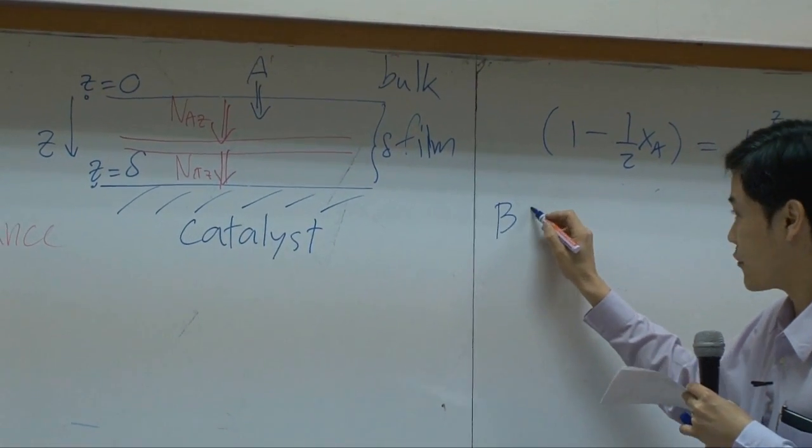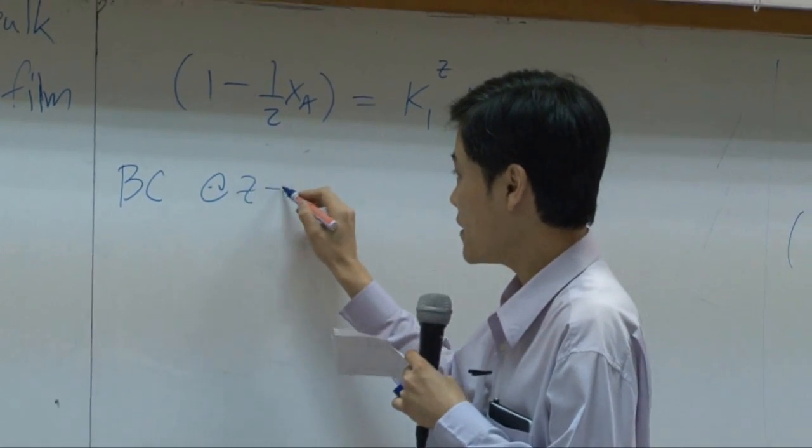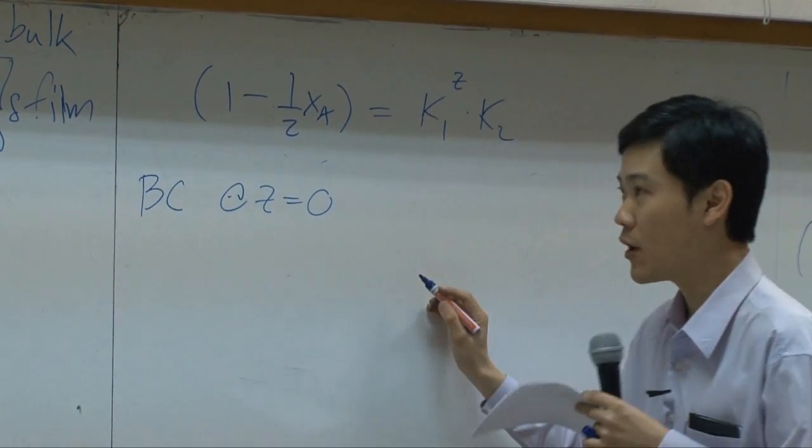So the first boundary, at Z equal to 0, what do we have?